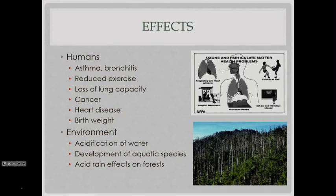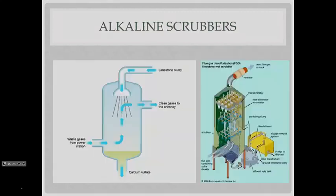Some of the ways we can handle that is we can require chemical processes. Before we vent out the waste air products from burning things, we can use what are called scrubbers. We have different technologies that allow us to mix in, in this case, things like a limestone slurry.